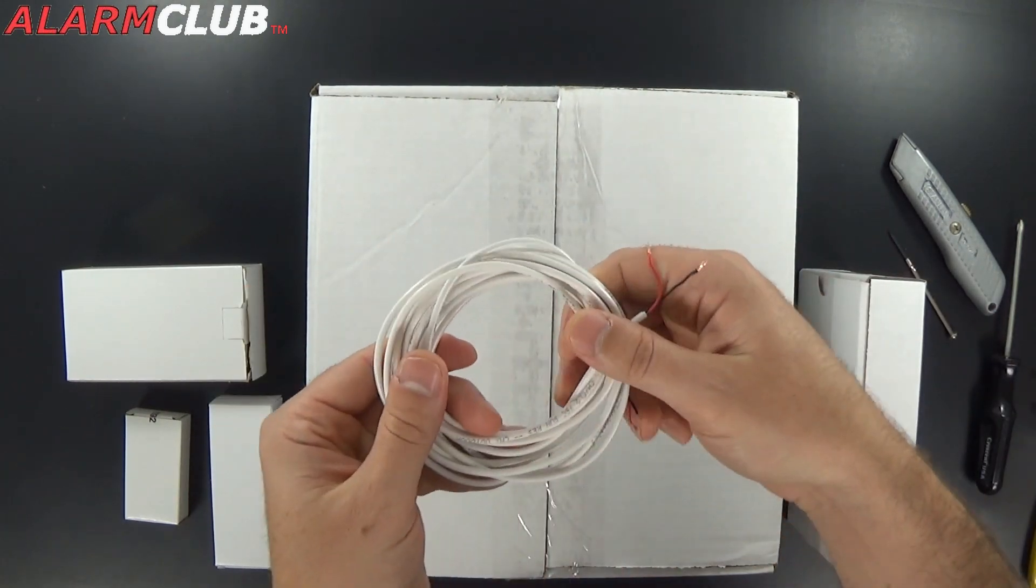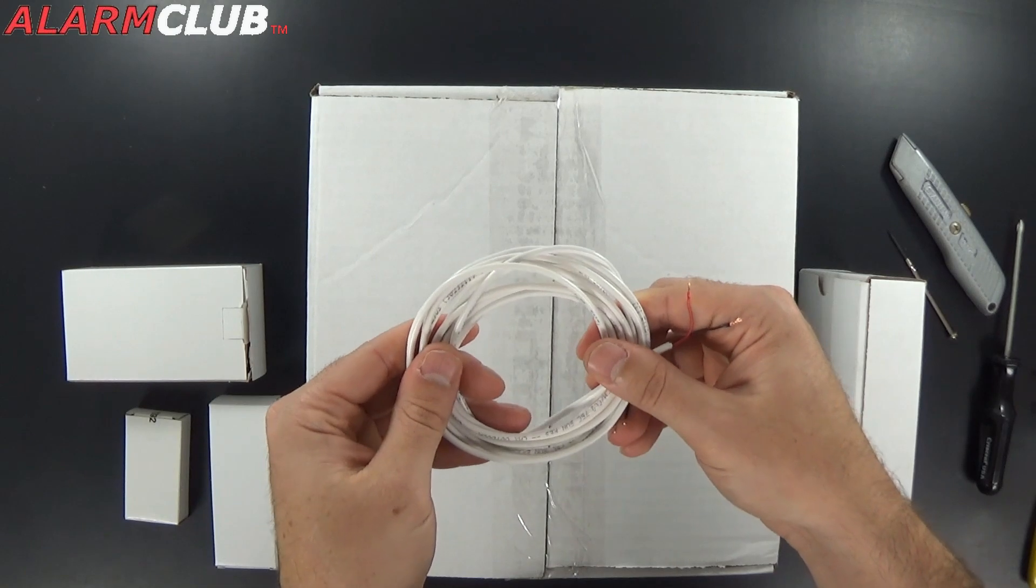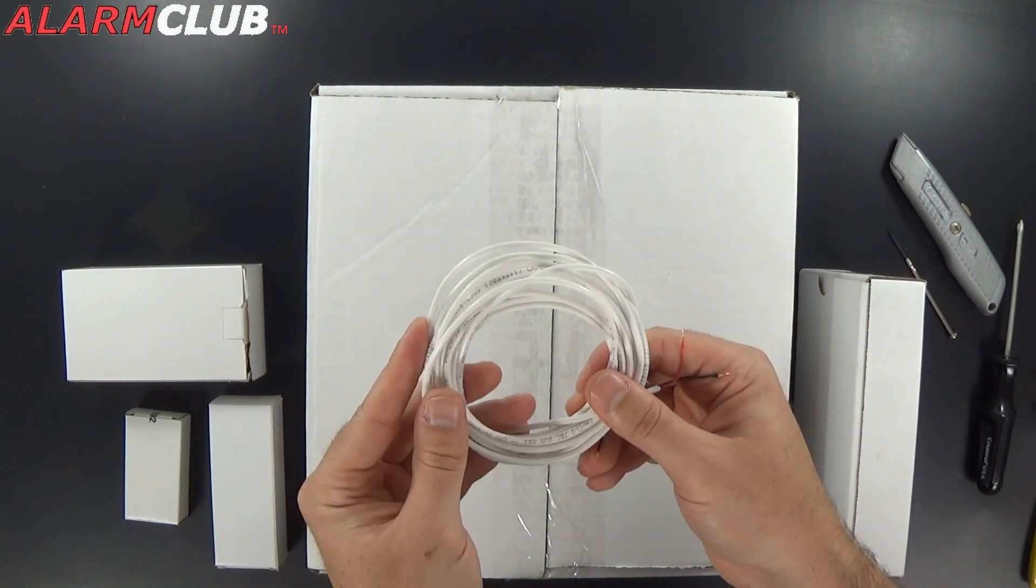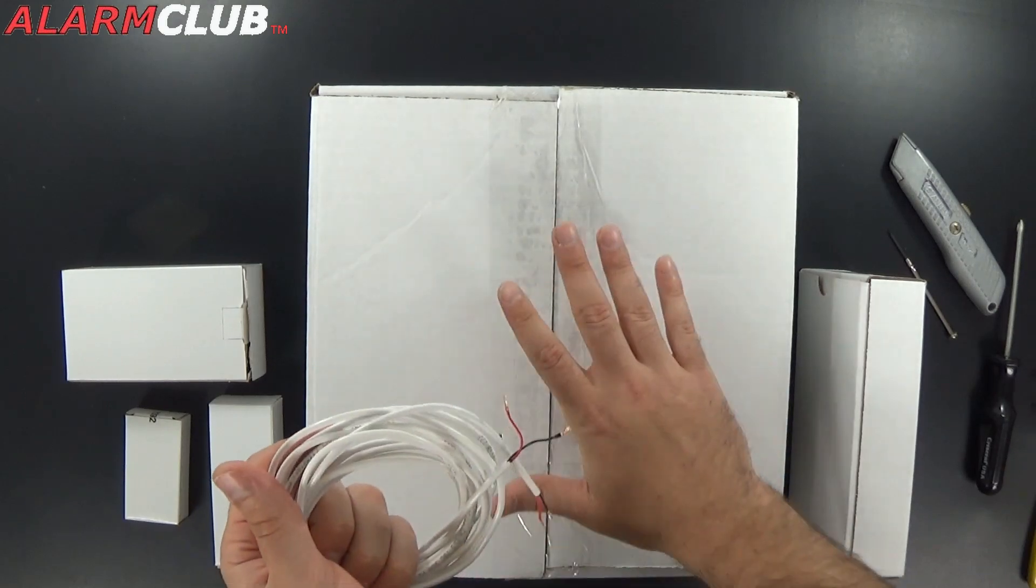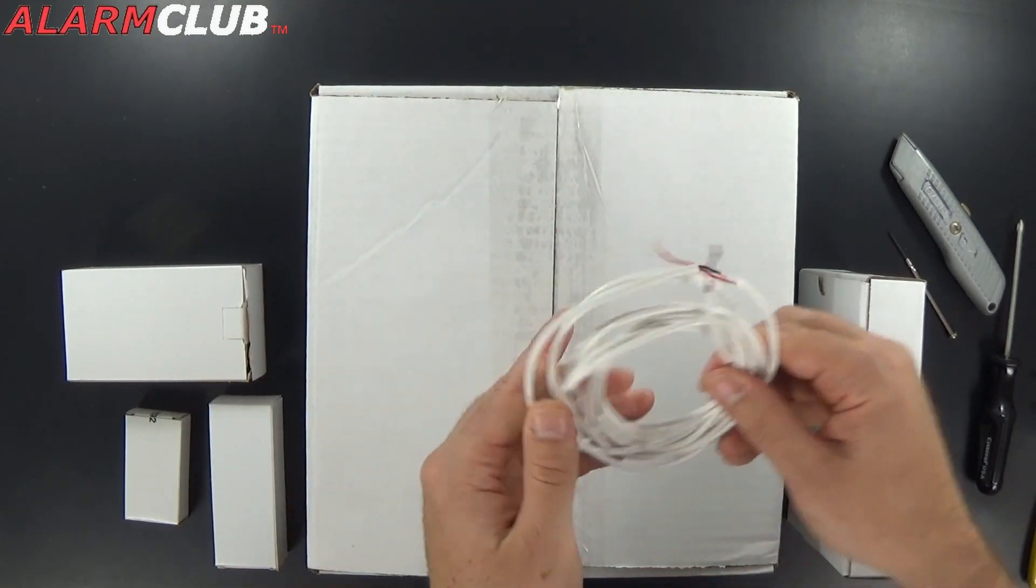Which I will go into more depth in the video, but you will need some 22 gauge by 2 wire cut to the length from the power transformer which is inside to the panel which is inside. So I just wanted to give you a heads up on that.